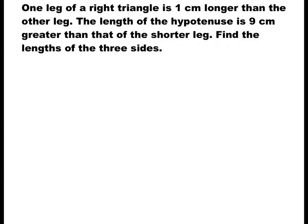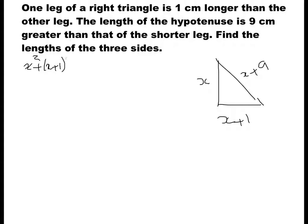The next example involves a right triangle where one leg is one centimeter longer than the other. If the shorter leg is x, the other is x plus 1. The hypotenuse is 9 centimeters greater than the shorter leg, so it is x plus 9. Using the Pythagorean theorem: x squared plus (x plus 1) squared equals (x plus 9) squared. After expanding and simplifying, we get x squared minus 16x minus 80 equals zero.